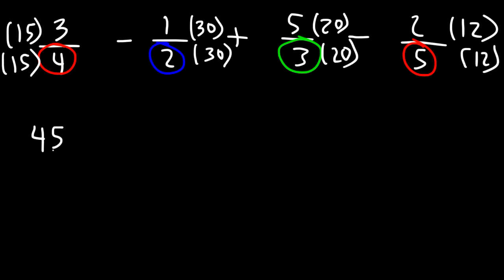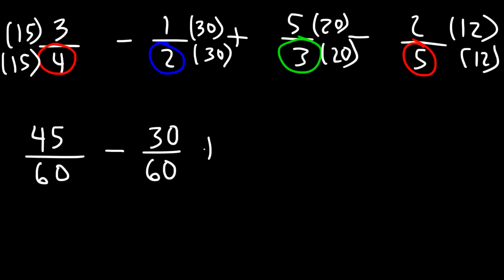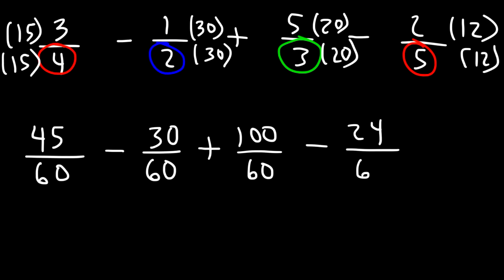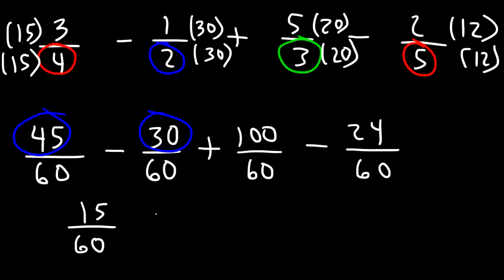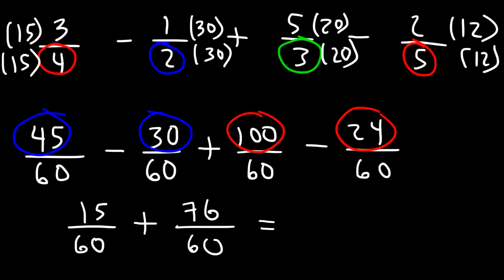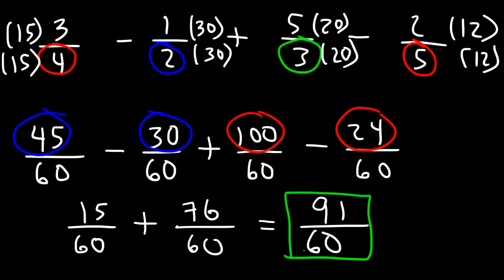15 times 3 is 45, and 15 times 4 is 60. 1 times 30 is 30, and 2 times 30 is 60. 5 times 20 is 100, and 3 times 20 is 60. 2 times 12 is 24, and 5 times 12 is 60. Now subtract: 45 minus 30 is 15, so we have 15 over 60. Then 100 minus 24 — 100 minus 20 is 80, minus 4 is 76. Now add 15 and 76, which is 91. So the final answer is 91 over 60.